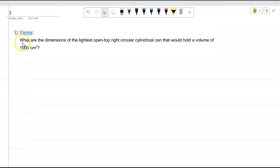That's the key thing. The volume is given. What are the dimensions? The radius and the height. In this case the radius and the height.